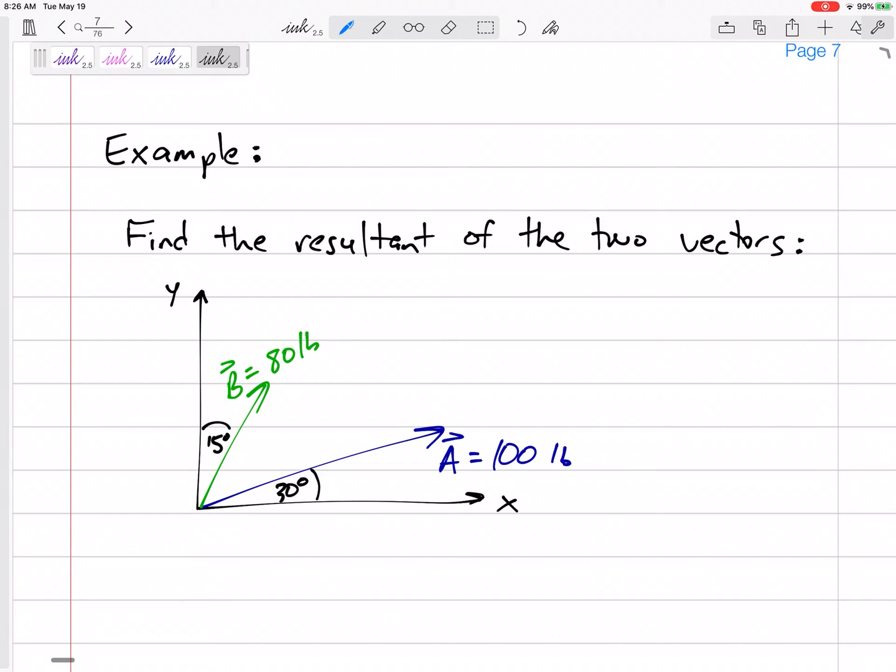Okay, so now you are very comfortable breaking vectors into their components. Let's use that here so we can find the resultant. Find the resultant means to add vectors together, but you can't just add, can't just say 100 plus 80 equals 180. No, you're smarter than that. You know that we need to break into components.